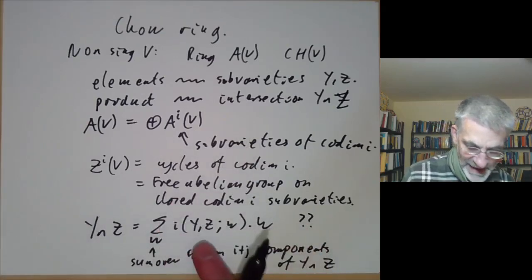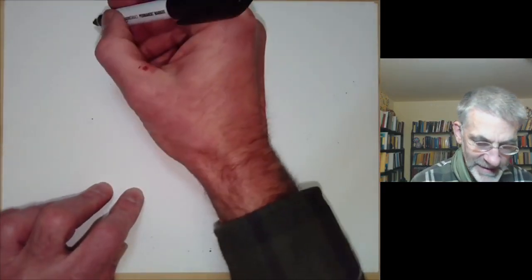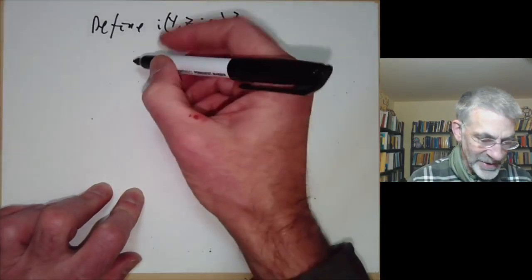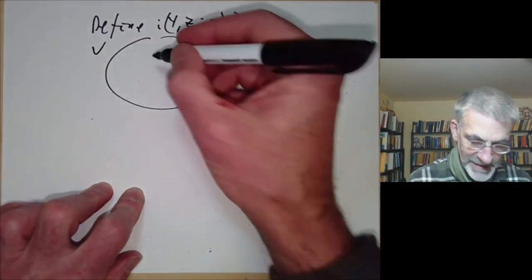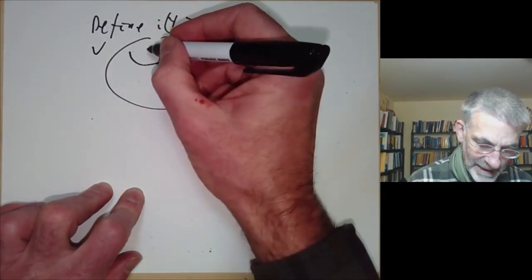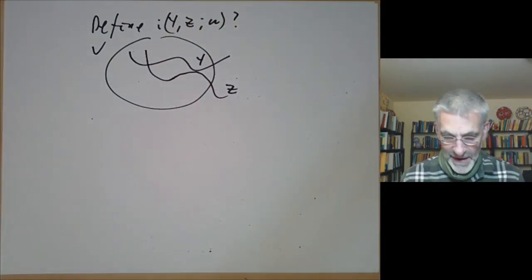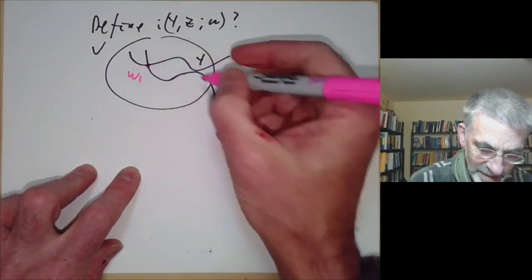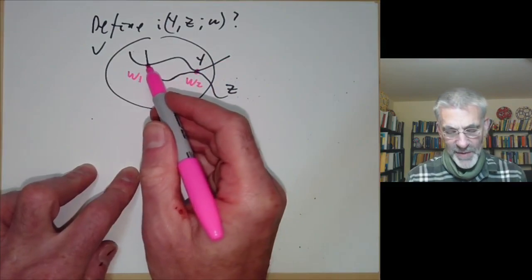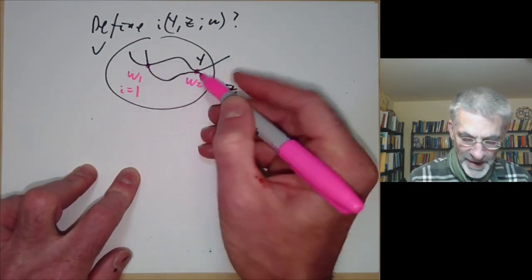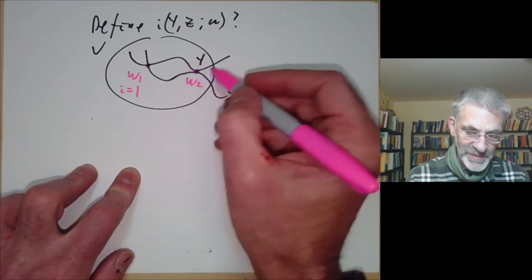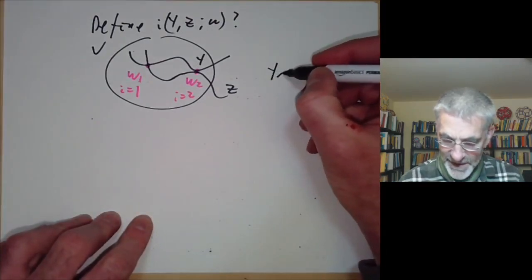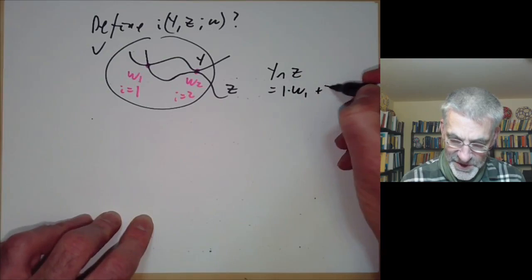This intersection number tells you the multiplicity of the intersection of Y and Z at the component W. So the picture you might have: here's V, and Y might look like this and Z might look like this. In this particular example the intersection is going to have two components — W1 and W2. At W1 the intersection number should be 1, and here Y and Z are touching to order 2, so the intersection number ought to be 2, and Y intersection Z should be something like 1 times W1 plus 2 times W2.